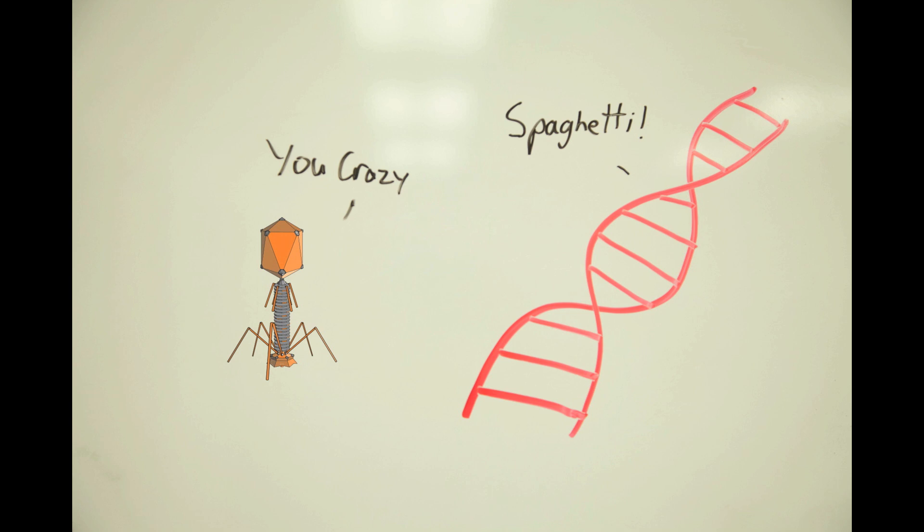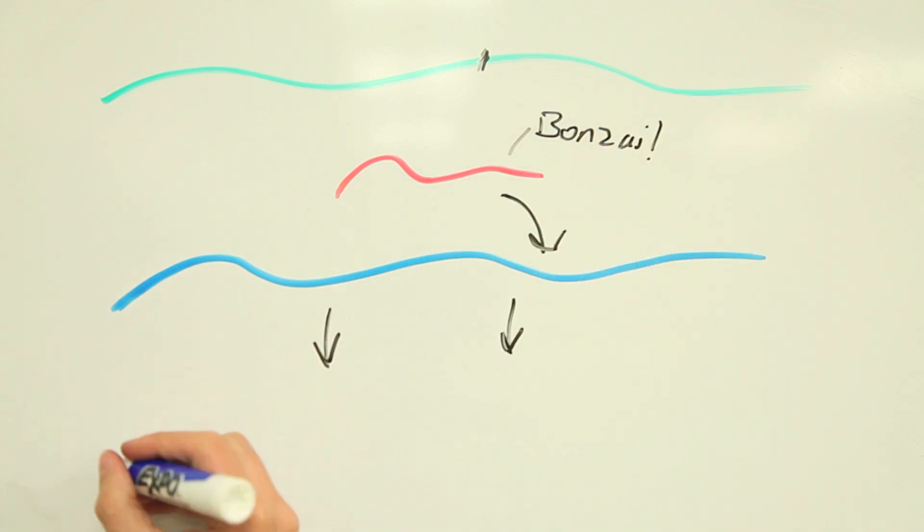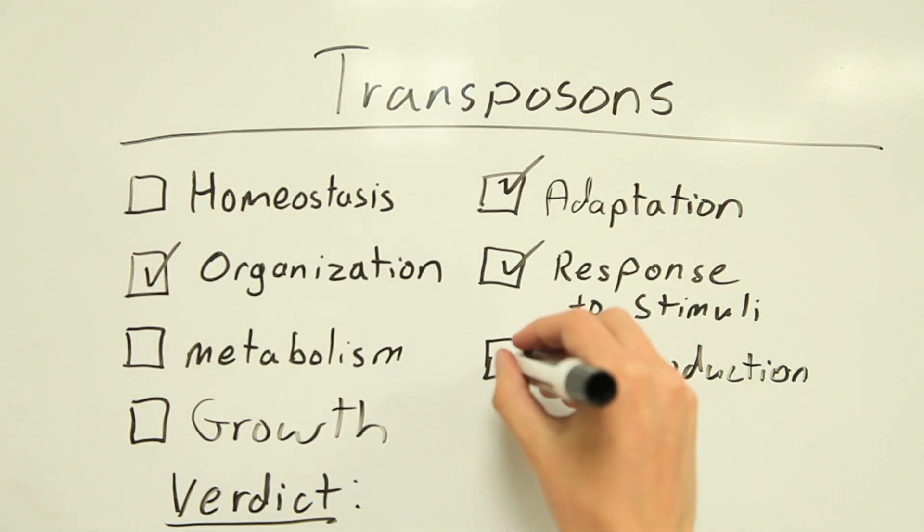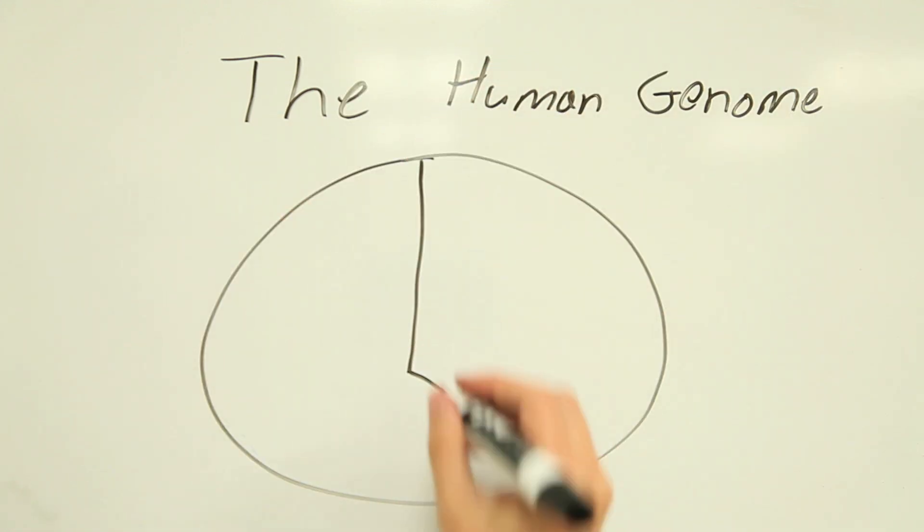Transposable elements, or transposons, are even weirder than viruses, and even harder to classify. Essentially, a transposon is a length of DNA, seen here in red, that can cut itself out of its place in a genome and move to another place in the genome. Is it alive? The obvious answer is no, but then these jumping genes seem to operate independently of their host genome, and they tend to copy themselves. In fact, over half of the human genome is made up of transposons and ancient viruses.